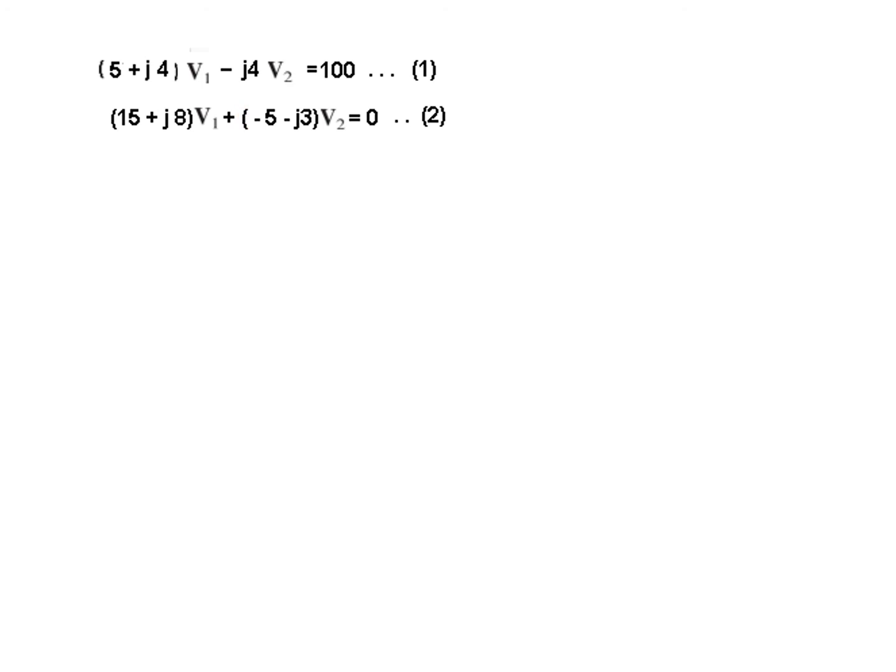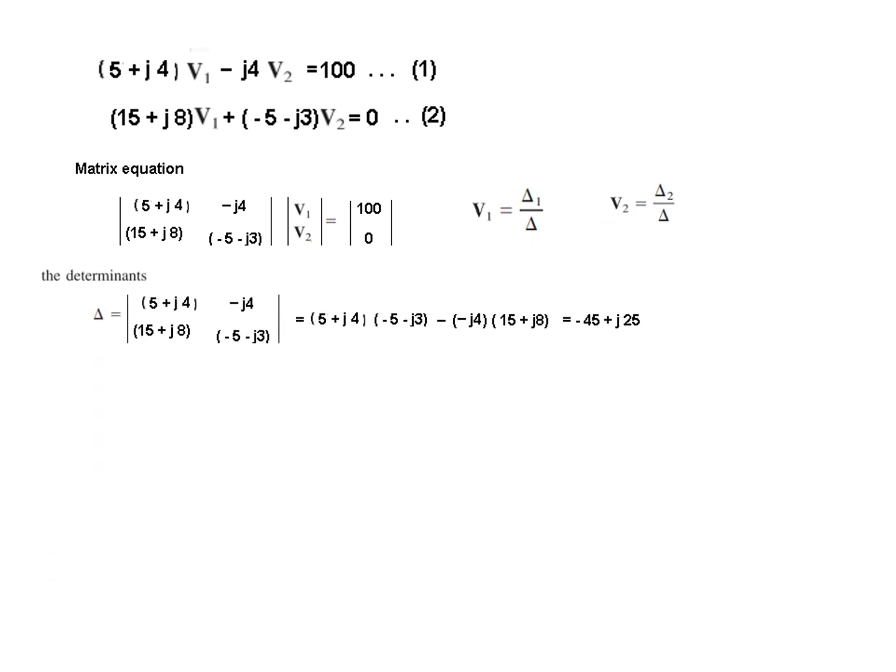Now that we have these two equations we can solve them easily by means of a matrix equation. So we write in the form of a matrix the components here and we know that V1 is delta 1 over delta, V2 is delta 2 over delta and delta is the determinant from here. So solving we get this value and for delta 1 we replace the first column with the output voltage so here this is delta, here this is delta 1 and similarly delta 2 we replace the second column and then we solve, so this is delta 2.